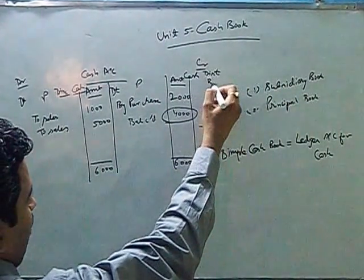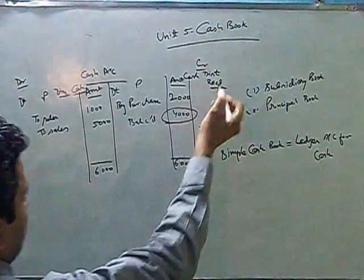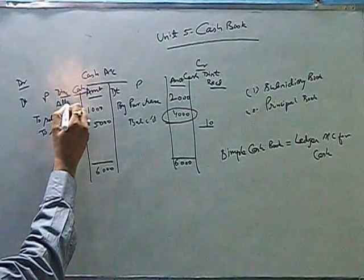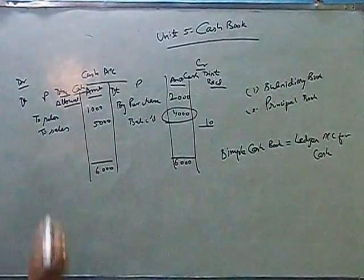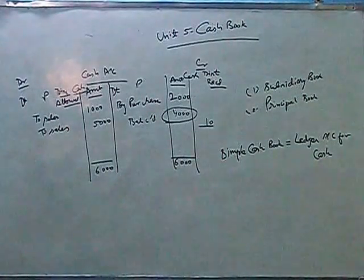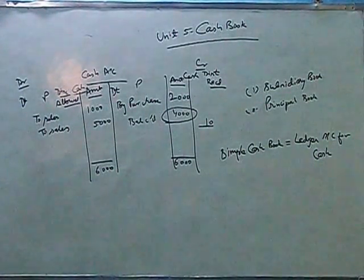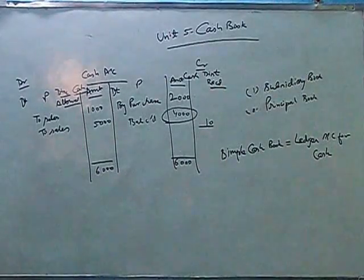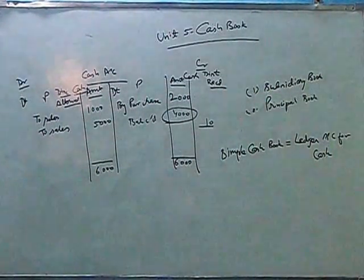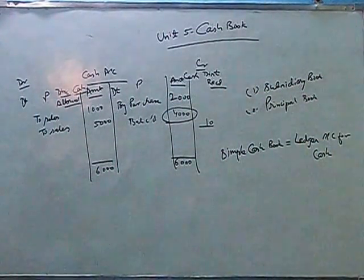And if discount is received, so if discount is received, it is discount received. Because that is an income. And this is discount allowed. Because that is an expense. Just try to have a look at it and understand it a little bit more.